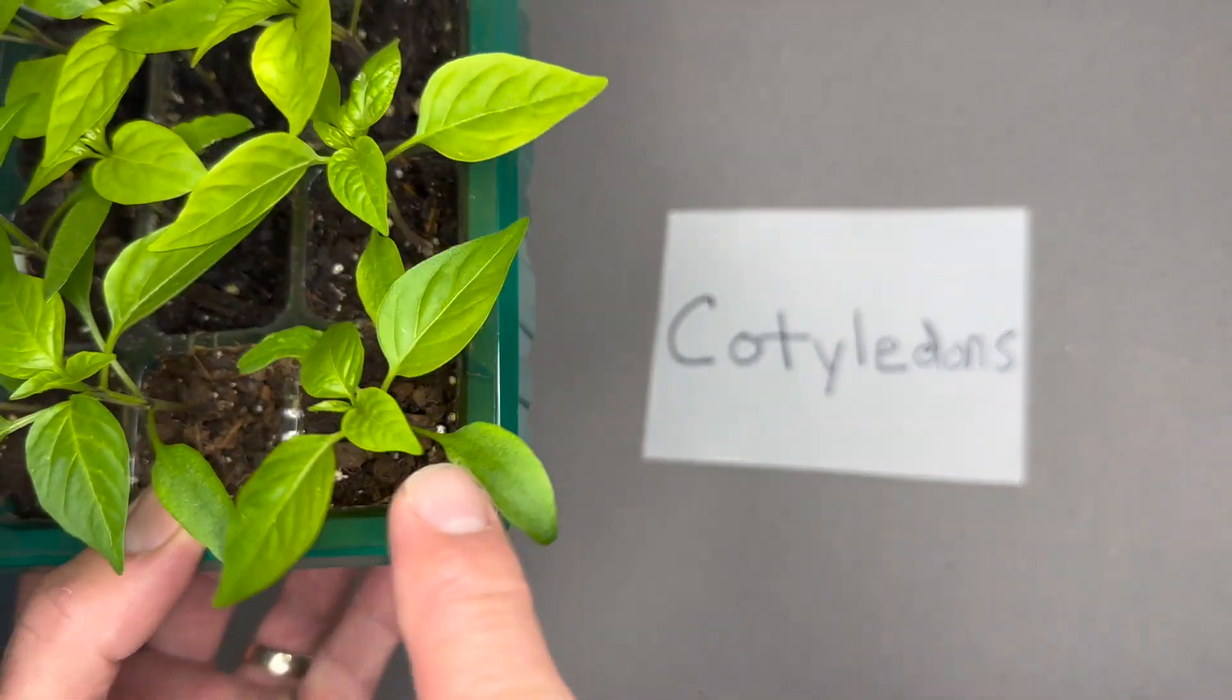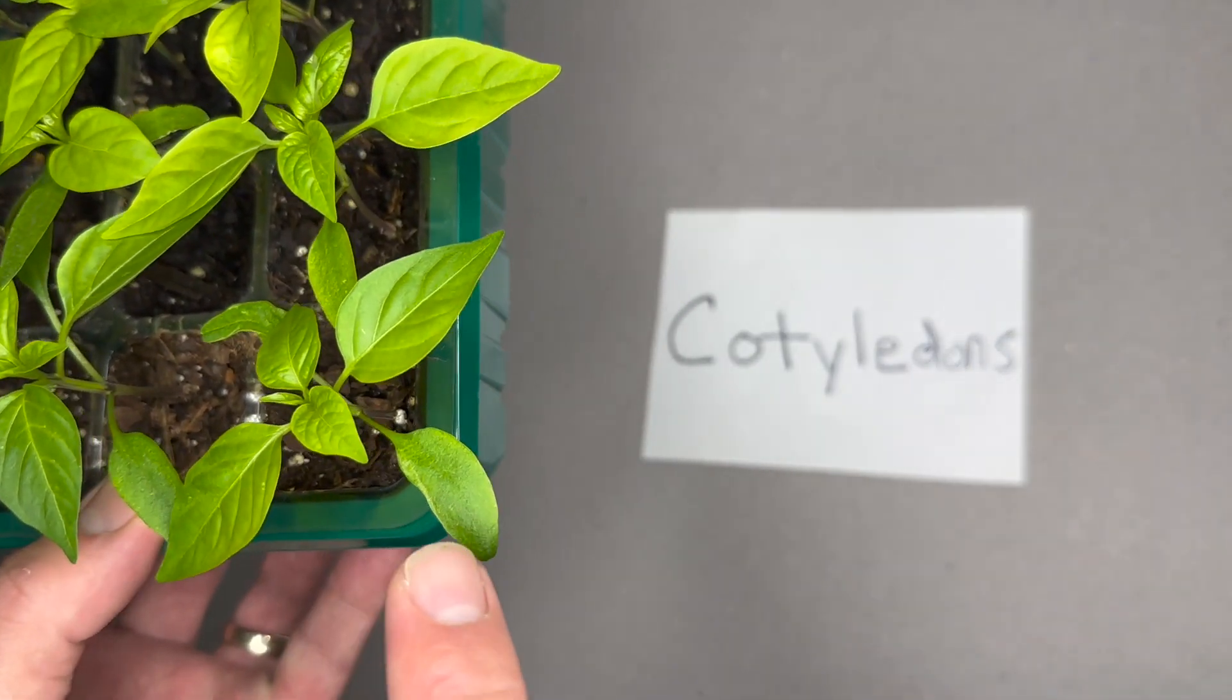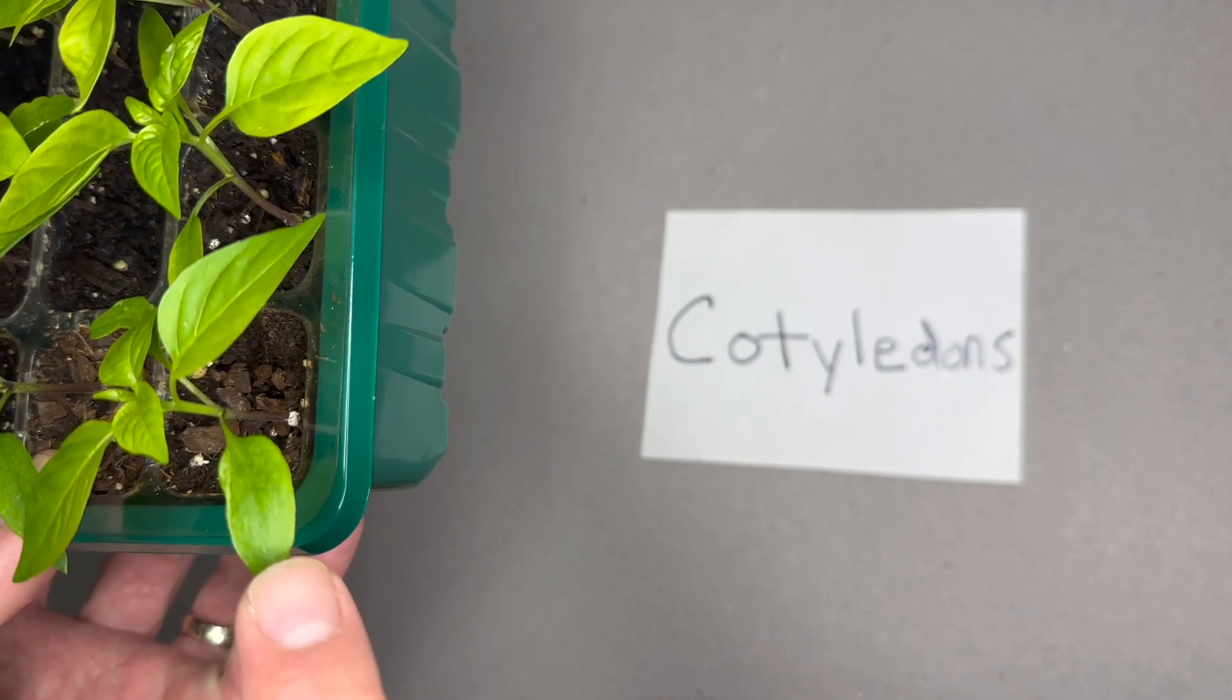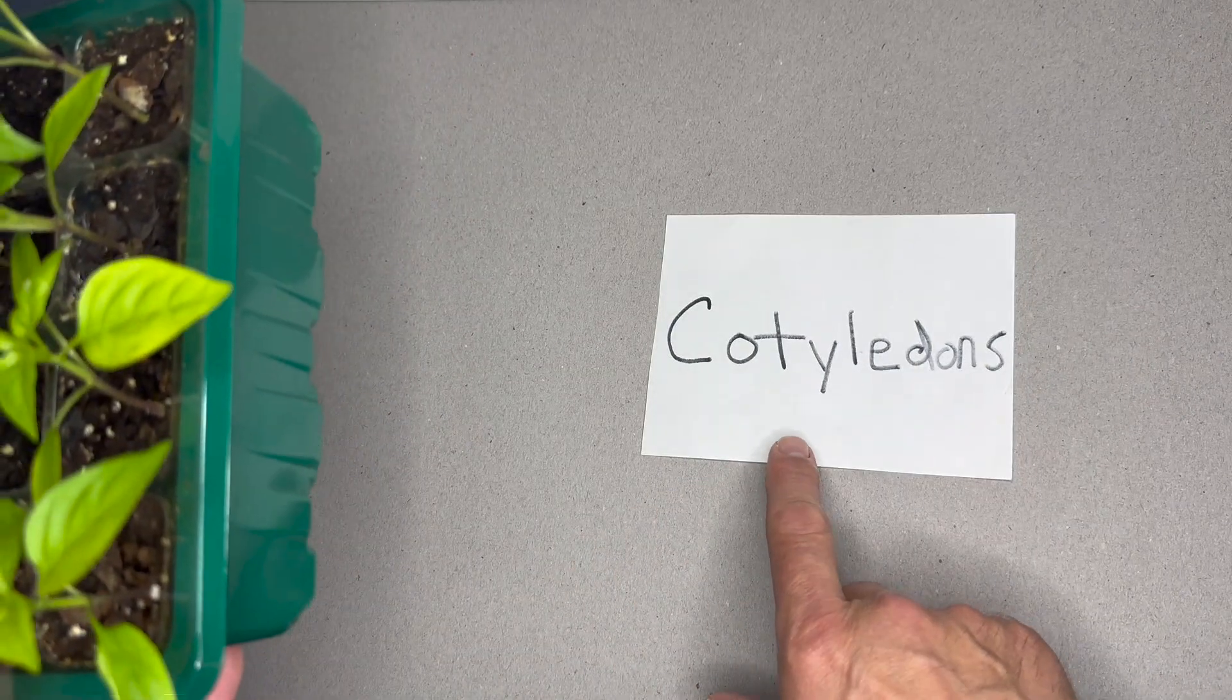So the very first leaf - now these are some pepper plants, they're about two weeks since they sprouted. This first leaf right here is not a true leaf. It's called - what you see down here is a cotyledon.